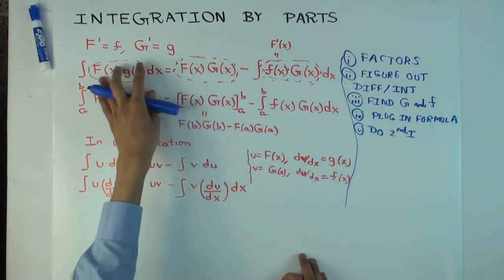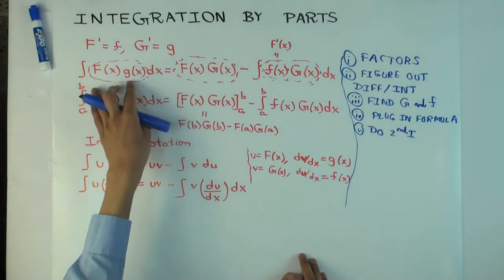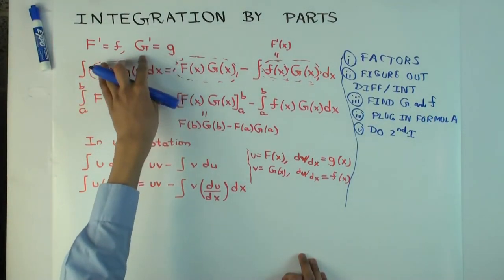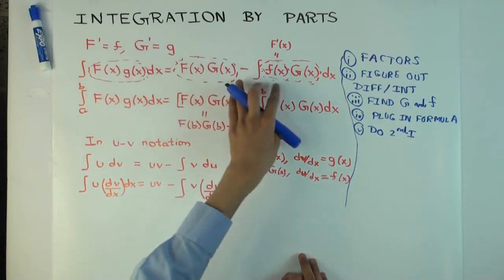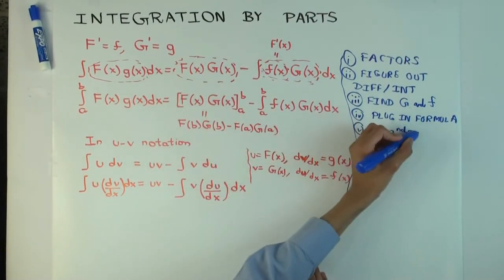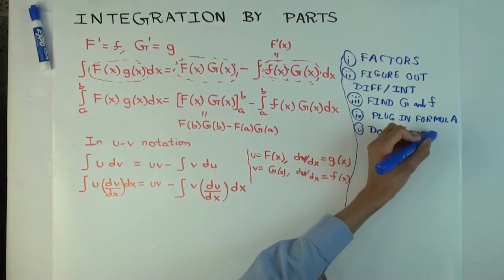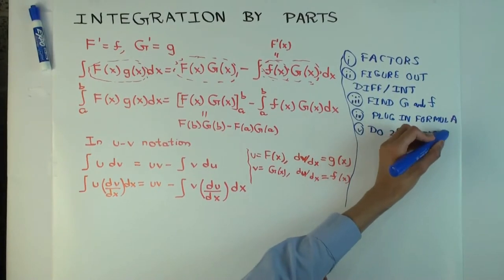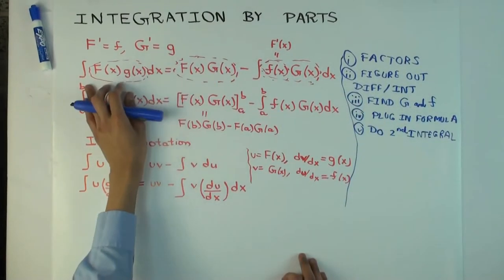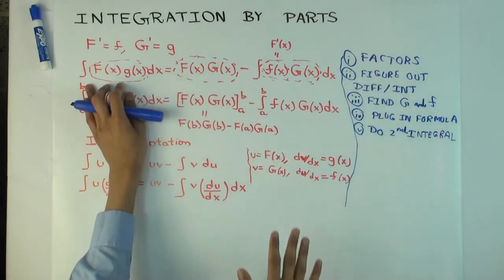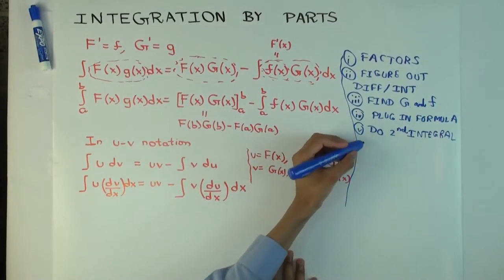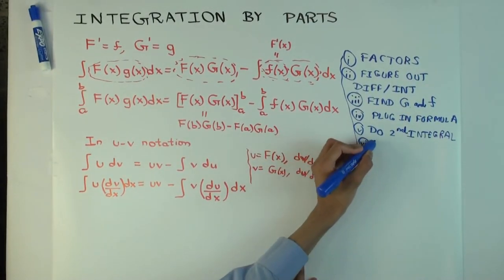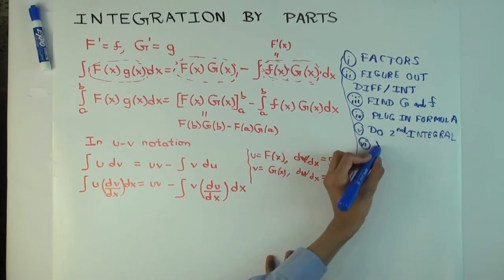So, overall, you see there's two, even in the lucky case, there's two integration problems here. One is finding the antiderivative for little g, and the other is doing this second integration. Which, hopefully, is easier to do than the original one. I mean, that was the whole point of using integration by parts.